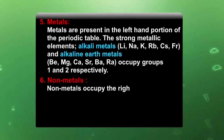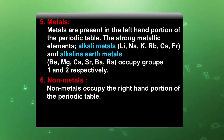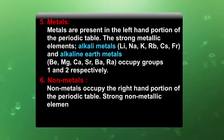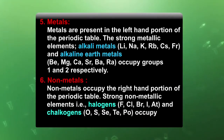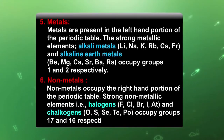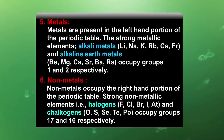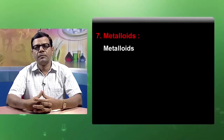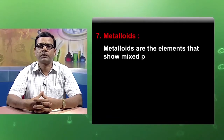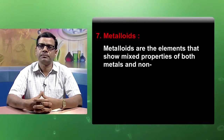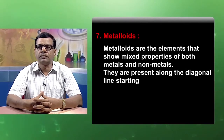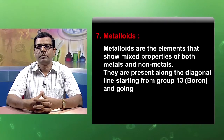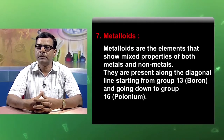Nonmetals occupy the right-hand position of the periodic table. Strong nonmetallic elements — the halogens: fluorine, chlorine, bromine, iodine, and astatine — and the chalcogens: oxygen, sulfur, selenium, tellurium, and polonium — occupy groups 17 and 16 respectively. The metalloids are elements that show mixed properties of both metals and nonmetals. They are present along the diagonal line starting from group 13 (boron) and going down to group 16 (polonium).